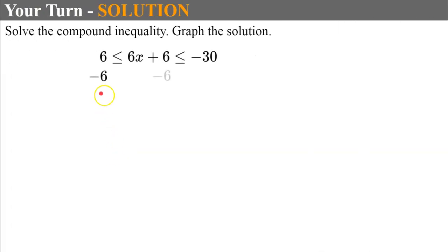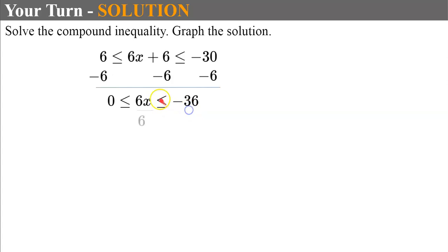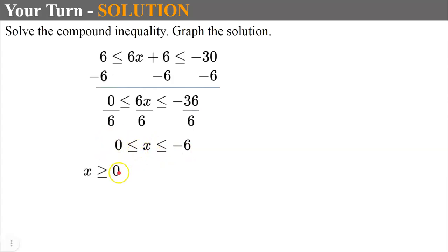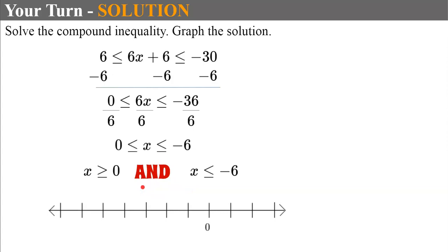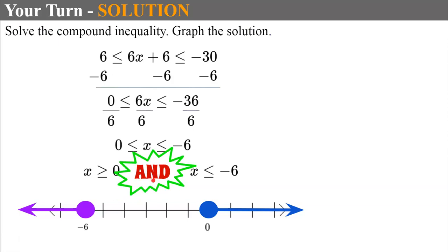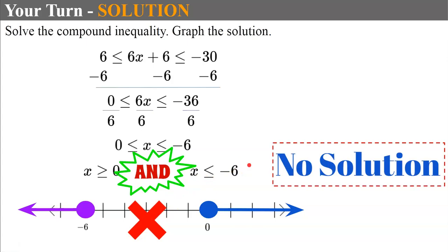Welcome back. Using the shortcut again: subtract 6 from each part of the compound inequality. 6 minus 6 is 0, leaving 6x and negative 36. Now divide each part by 6 to clear the coefficient, giving 0 less than or equal to x less than or equal to negative 6. Breaking this out and flipping: x is greater than or equal to 0, and reversing gives x less than or equal to negative 6. Graphing: closed circle on 0 with arrow right, closed circle on negative 6 with arrow left. It's an AND, so looking for the intersection, which does not exist. No solution.